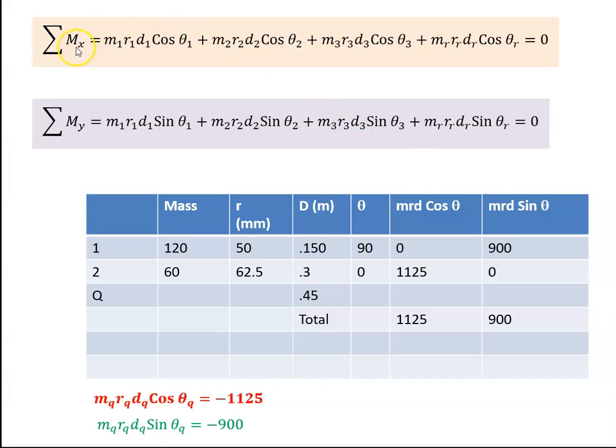We want to get the sum of the moments in the x direction. So here's M1 R1 D1 cosine theta 1 which is this value here. M2 R2 cosine theta 2 which is this value here. There is no M3 so we don't need this guy. Let's put it there. We don't need that, we won't need that as well. And this is our solution.